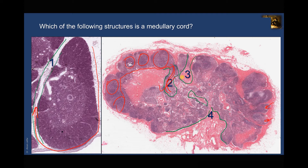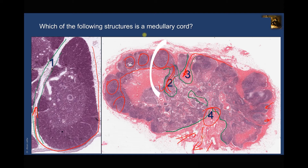Looking at the other options: number three is formed of dense connective tissue — it is a trabecula extending from the capsule, dividing the node into compartments. Structure four is another trabecula, located at the region of the hilum of the lymph node where blood vessels enter and leave and where efferent lymphatic vessels also leave. So the correct answer — the medullary cord — is two.